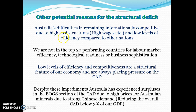Australia's difficulty in remaining internationally competitive is due to high cost structures, high wages, and low levels of efficiency. We are not in the top 20 performing countries for labour market efficiency, technological readiness, or business sophistication — all of which lead to lower efficiency, make us less competitive, and put upward pressure on the CAD. So structural deficits are caused by high levels of interest from net foreign debt, which stems from needing overseas funds to fuel investment, as well as high cost structures and low efficiency which mean we favour imports over exports.